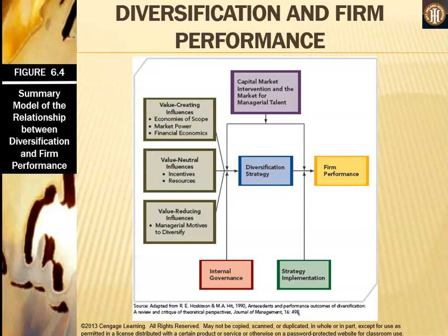To summarize the relationship between diversification and firm performance: value-creating influences are economies of scope, market power, and financial economies. Value-neutral influences are incentives and resources. Value-reducing influences are managerial motives to diversify. In the middle is diversification and then firm performance, which is affected by capital market intervention, the market for managerial talent, internal governance, and strategy implementation. That is it for unit 6 — please read the chapter in the textbook for additional understanding, as this is probably the most complex unit in strategic management and requires some additional reading.